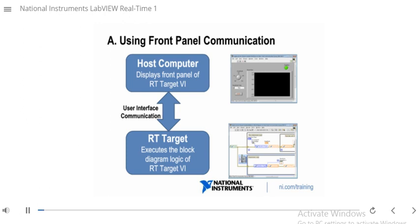In this slide, we review a concept called front panel communication. When you develop an RT VI on your host computer and hit the run button, the functionality defined in your block diagram gets downloaded to your RT target, and your RT target executes that functionality. At the same time, you have your front panel open on your host PC, and behind the scenes, the controls and indicators on your block diagram are updated from your RT target, with those values sent back up to the front panel on your host computer.